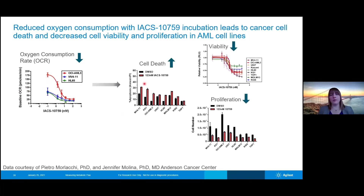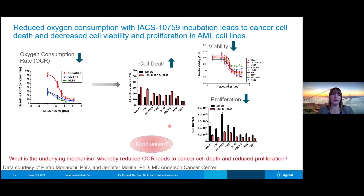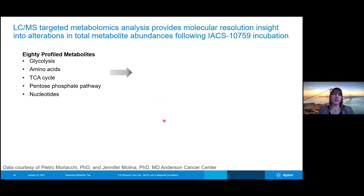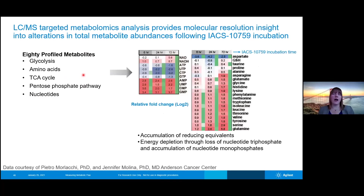What we see as a result is that there's an increase in cell death, as well as reduced viability and reduced cell proliferation. So we see a lot of inhibition of complex one of the electron transport chain — that's our cellular resolution view of what's going on. The real question was: what is actually happening in these cells and which metabolites are impacted the most? In this example, there was a targeted metabolomics analysis of 80 different metabolites to look at what the levels are after treating cells with the IACS inhibitor.